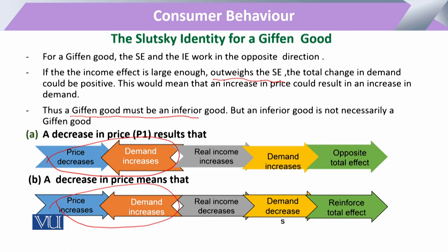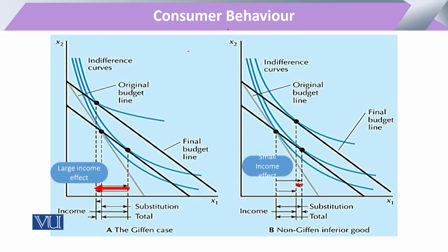For a Giffen good, it is necessary that it should be an inferior good — it must have a perverse price response and at the same time there should be no substitute or near substitute available. But for an inferior good, it is not compulsory that it will be a Giffen good.